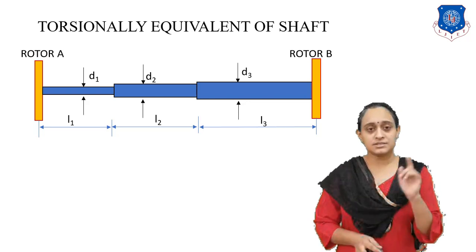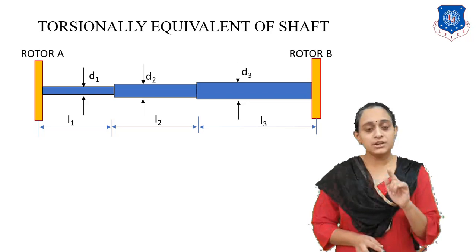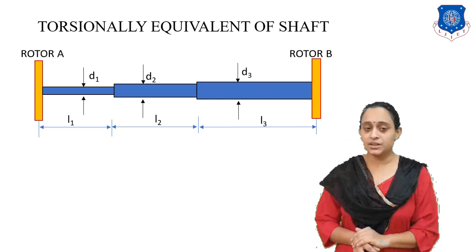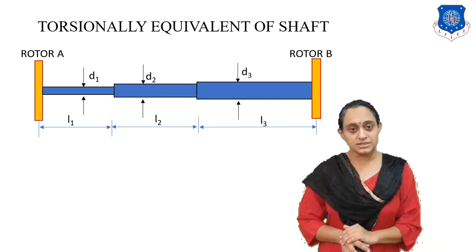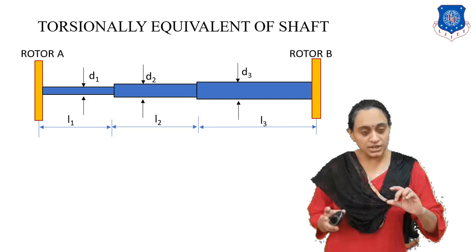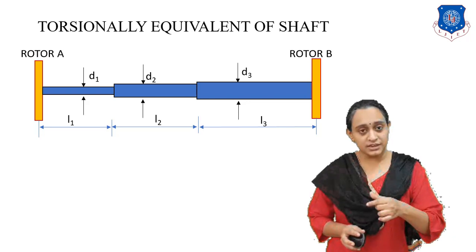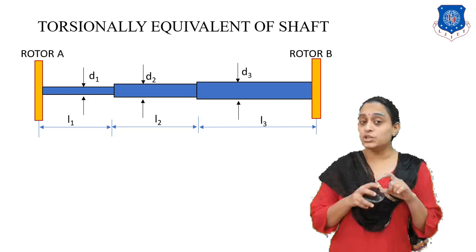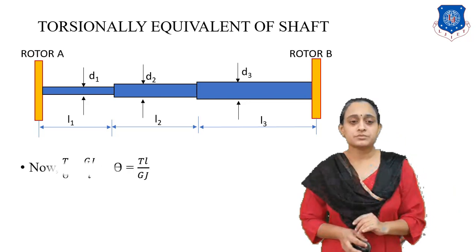Now let us consider the torsional equivalent shaft. Here we have rotor A and rotor B with a stepped shaft of different diameters D1, D2, and D3 and lengths L1, L2, and L3. To solve this, we consider that both rotors rotate in opposite directions. The shaft will turn at angle theta1, the second portion at theta2, and the third at theta3. To find the total angle we take the sum of all three angles.